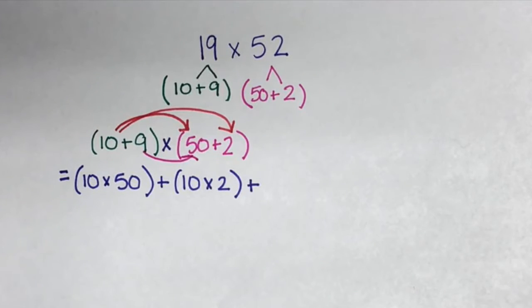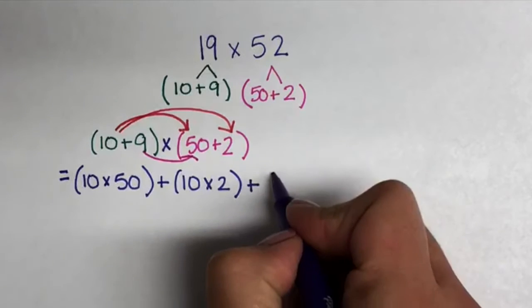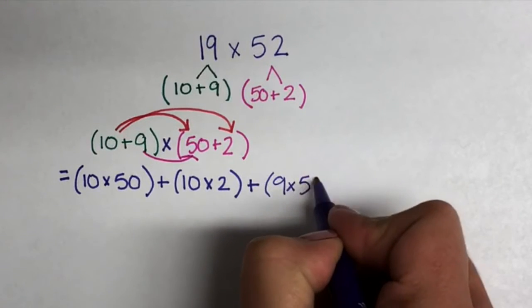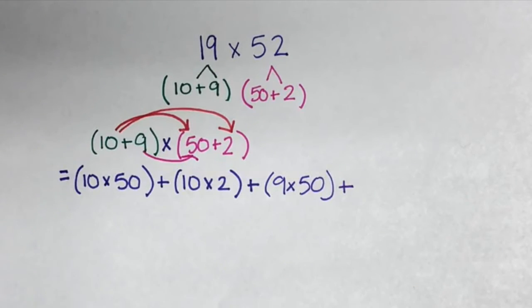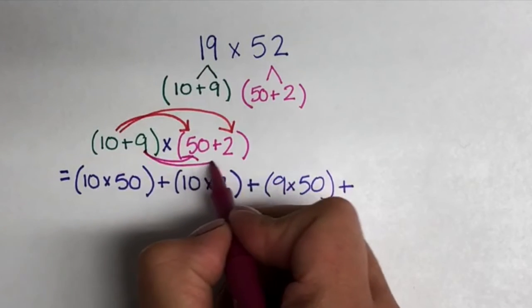Here we are moving to the 9. We are going to multiply the 9 by each of the other numbers, starting with 50. 9 times 50 represents the 9 in 19 times the 5 in 52.